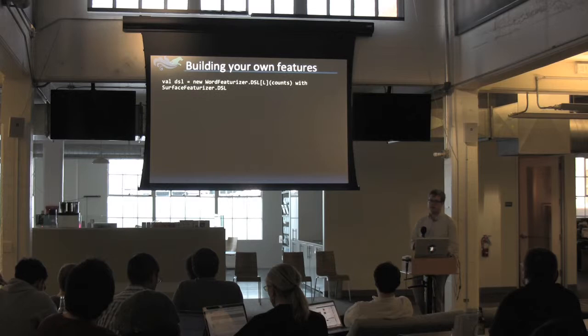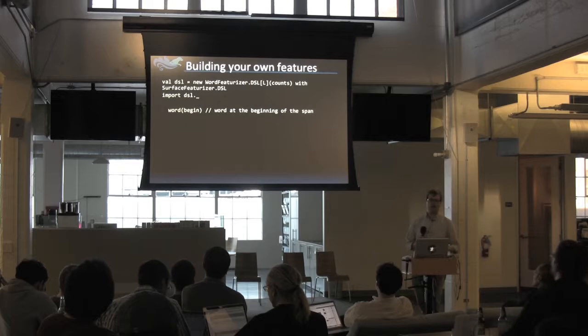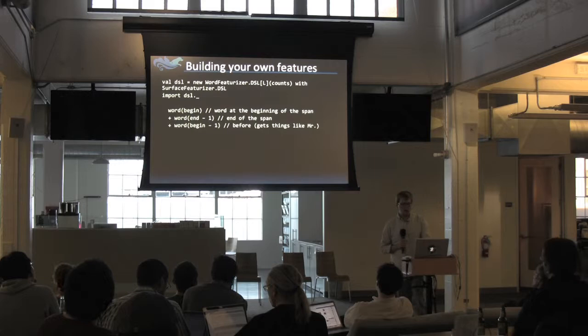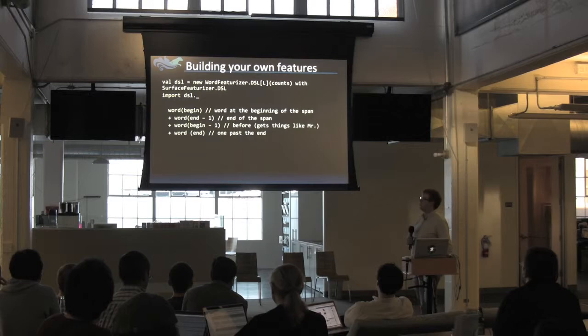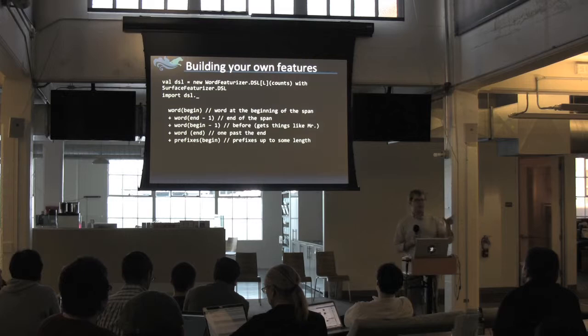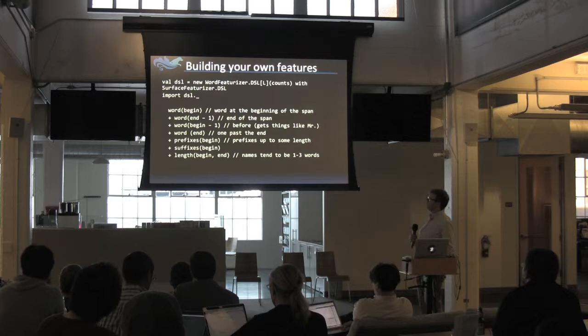In Epic, we represent this with a domain-specific language (DSL) built using word counts extracted from data. We import the DSL and build up a set of features: the first word, the last word, the word that comes before (since titles like mister, chairman, chairwoman often precede people), the word after (for esquire, governor, etc.), prefixes and suffixes of the words, and then the length since names tend to be relatively short. And then whether or not it's in the gazetteer.